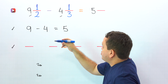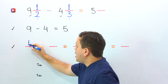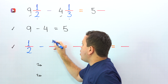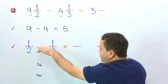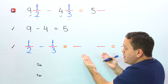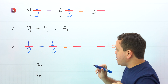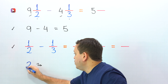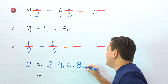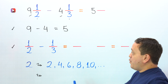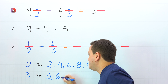It's time to subtract the fractions. The fractions are 1 half and 1 third. Don't change the order — we have 1 half minus 1 third. These two fractions have different denominators: 2 on the left and 3 on the right. To find the difference, we need to find the least common multiple of the denominators. The first multiples of 2 are 2, 4, 6, 8, 10, and so on.